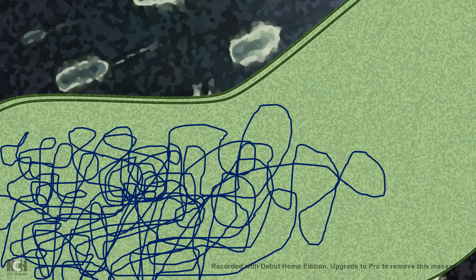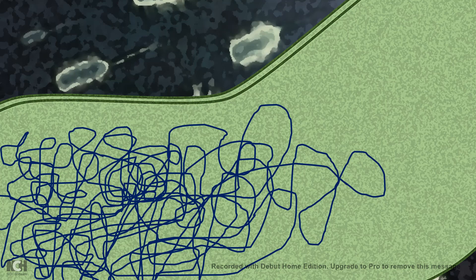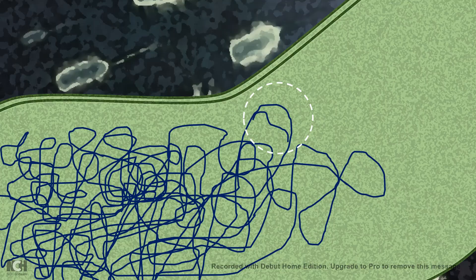In prokaryotes, the DNA is freely moving inside the cytoplasm, and there is no nuclear organization. The replication starts in the replication origin, a specific sequence where the replication bubble forms.